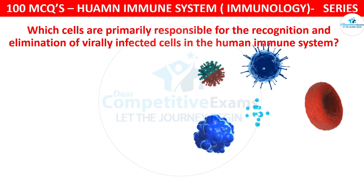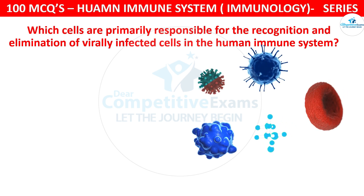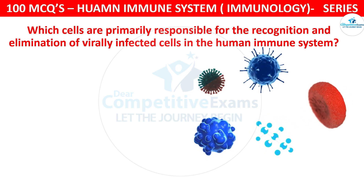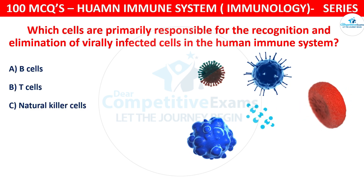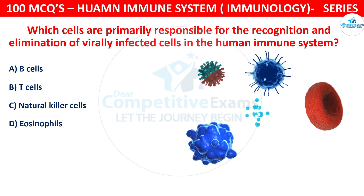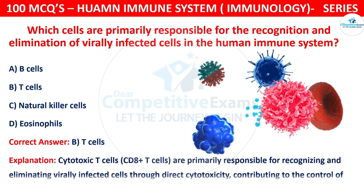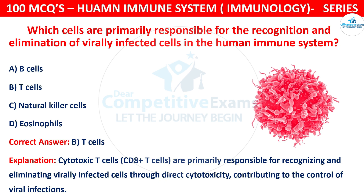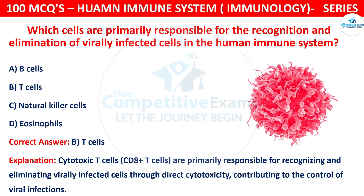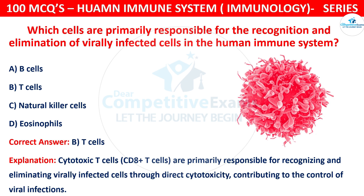Which cells are primarily responsible for the recognition and elimination of virally infected cells in the human immune system? The options are B cells, T cells, natural killer cells, or eosinophils. The correct answer is B, that is T cells. Cytotoxic T cells, CD8+ T cells, are primarily responsible for recognizing and eliminating virally infected cells through direct cytotoxicity, contributing to the control of viral infections.